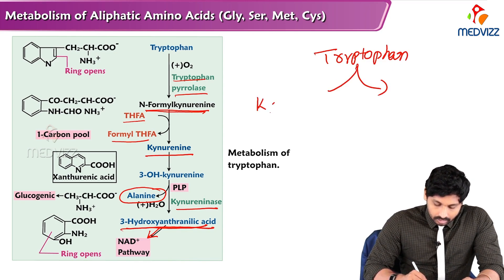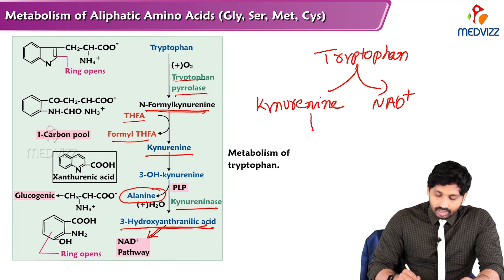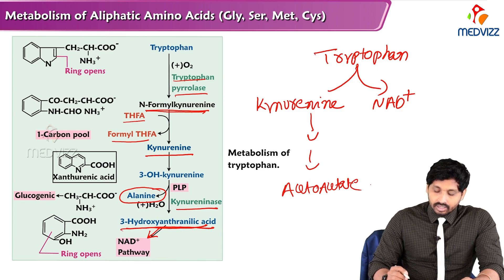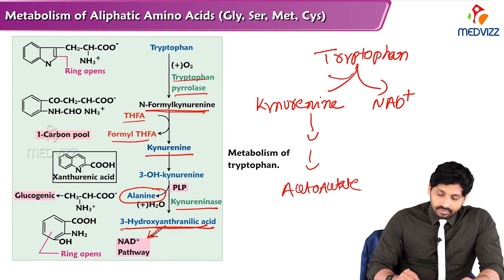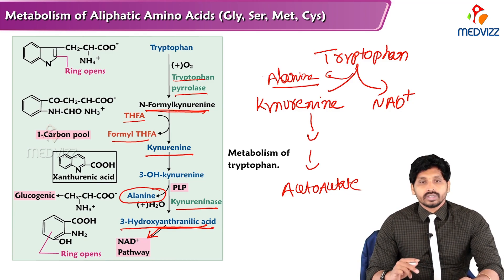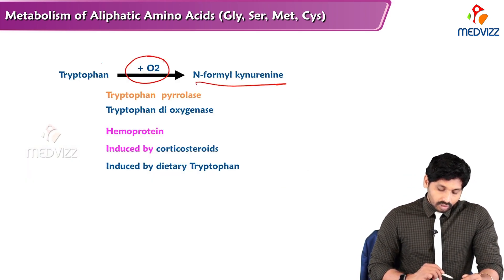So tryptophan has two fates: one is the kynurenine pathway and the other is the NAD+ pathway. The kynurenine pathway finally converts to acetoacetate (ketogenic), and midway it forms alanine — from 3-hydroxykynurenine to kynurenine — and this alanine enters the gluconeogenic pathway.